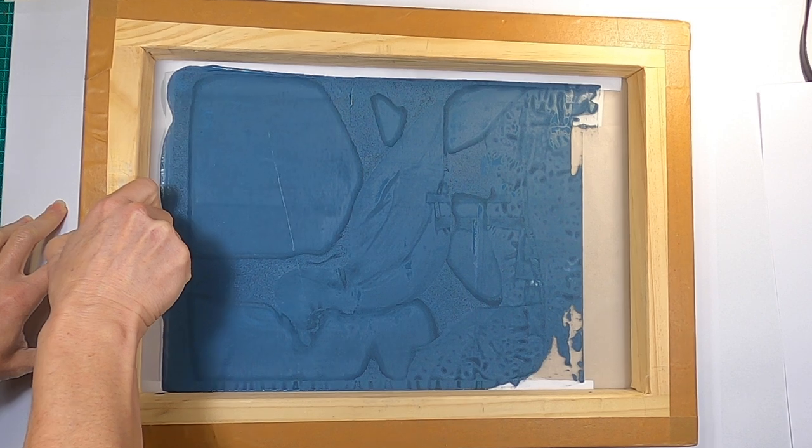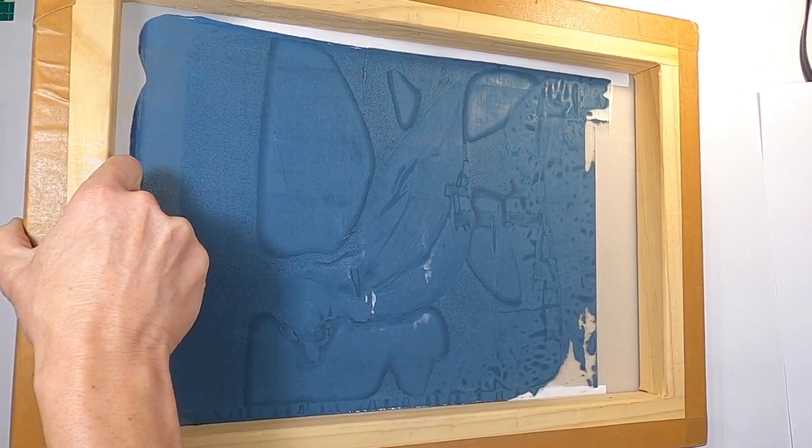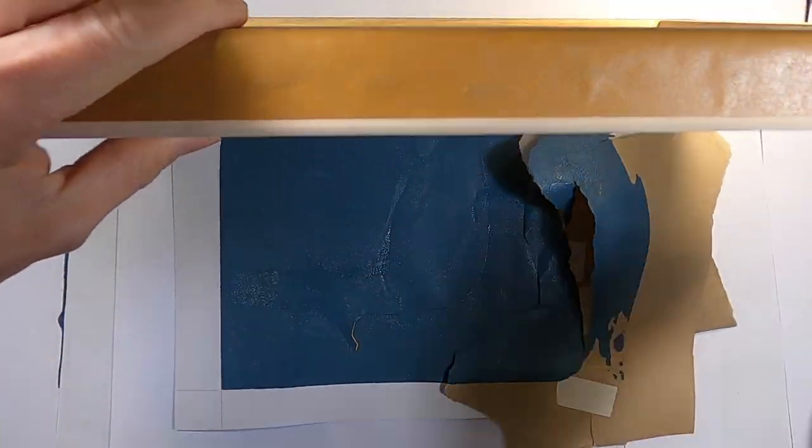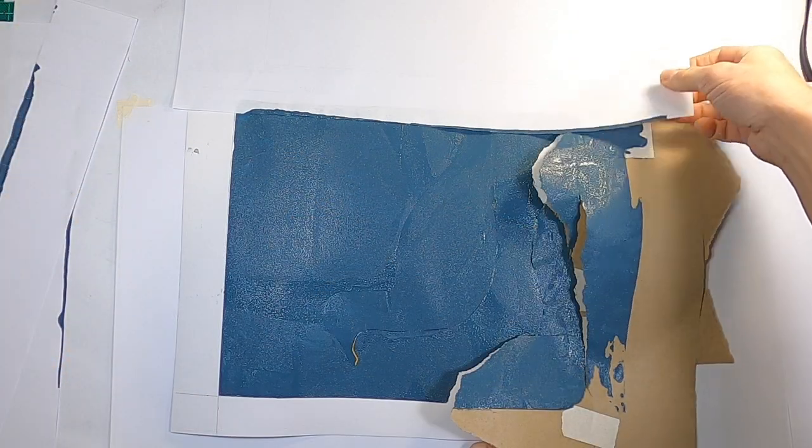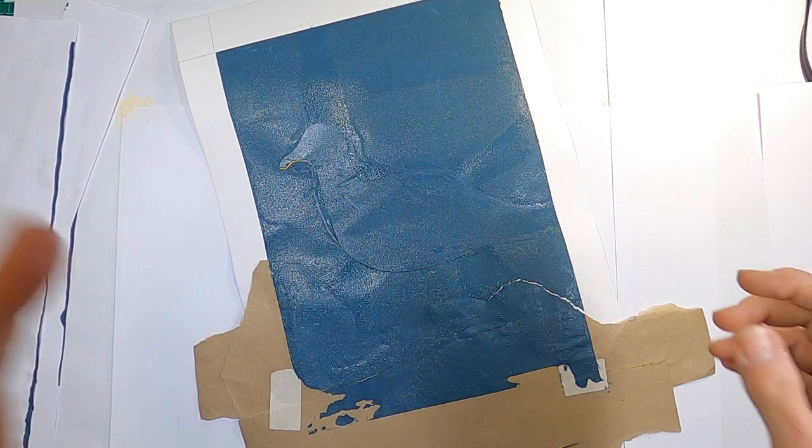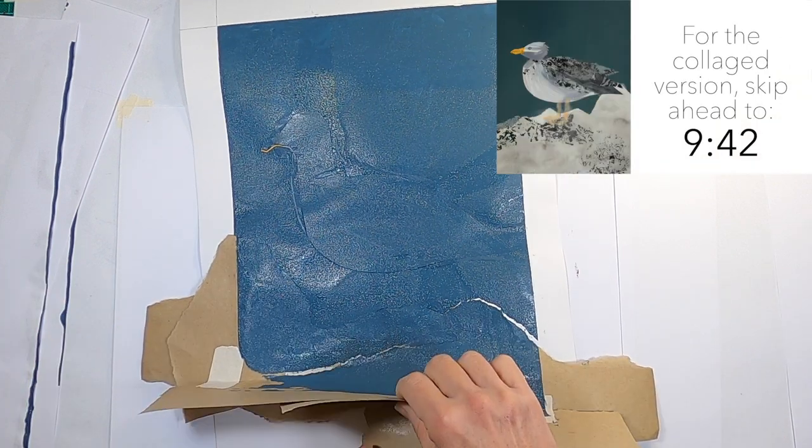Then lift up the screen and carefully remove the stencil pieces, lifting those little pieces of tape as well. You may need an extra set of helping hands for this step. The reason I'm using a silkscreen is so that the image is all in one piece and the bird and the background are seamlessly joined. But as I mentioned, I've included an easier option that doesn't require a screen.